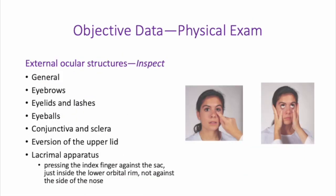You are going to inspect the external ocular structures — just generally what the eye region looks like. Examine the eyebrows, making sure they are evenly distributed. Examine the eyelids and lashes, making sure they look the same on both sides. Look at the eyeballs, conjunctiva, and sclera, making sure there is no discharge or redness. Look at the tear ducts — the lacrimal ducts specifically — making sure there are no clogged ducts and no discharge. Begin with the external points and work inward, keeping your method consistent each time so you don't forget to look at a particular structure.